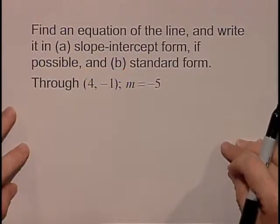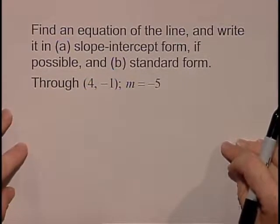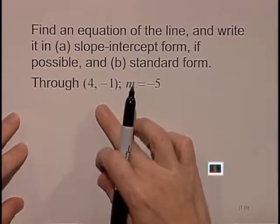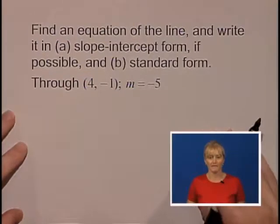Let's find an equation of the line and write it in (a) slope-intercept form if possible, and (b) standard form, through the point (4, -1), where m equals negative 5.